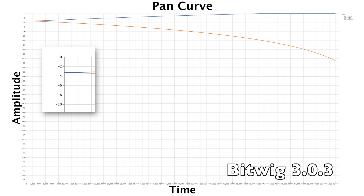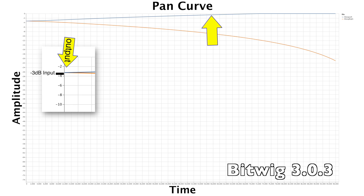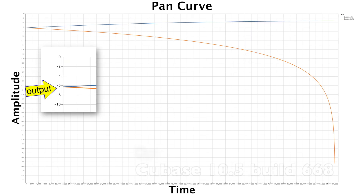Bitwig has no center compensation, but it does something I absolutely hate — it boosts the sides a ridiculous amount: plus 4.3 decibels. This means, as you can see, that it's possible to clip your master channel just by changing the pan a little bit.